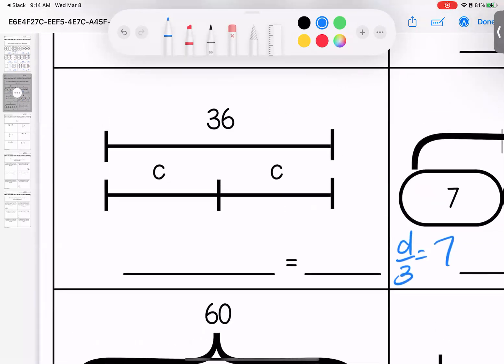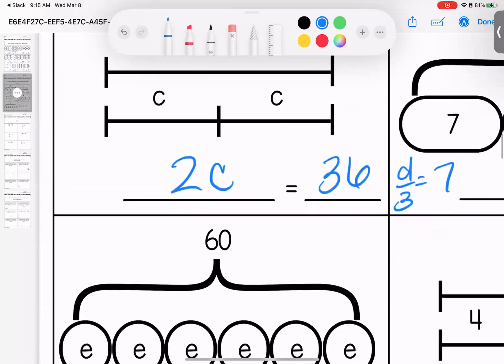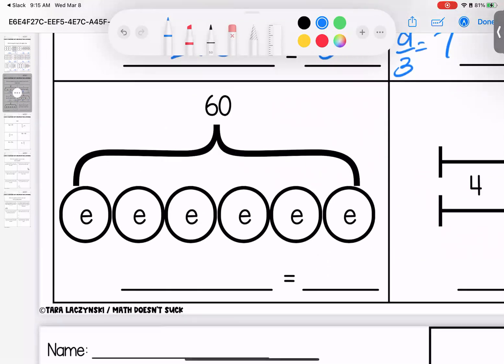Up here, we're starting with the number on top. So multiplication, two c's multiplied together give me 36. Down here I have six e's multiplied together give me 60.